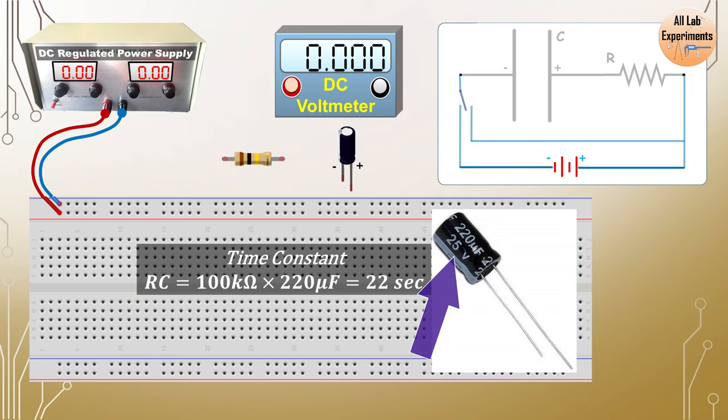So 25 volt is the maximum voltage which this capacitor can bear, so don't apply any voltage higher than this in any part of the experiment. Just take care of that. You need to take care one more thing here.